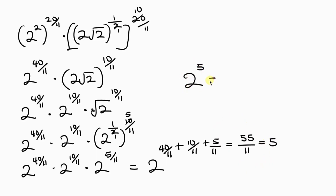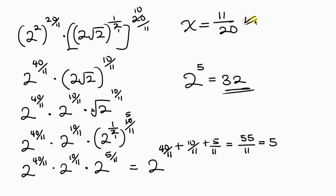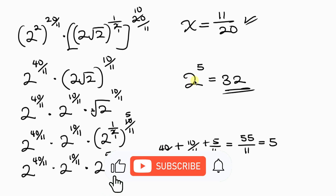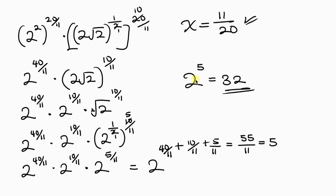And 2 to the 5 equals 32, which matches the right hand side. This confirms that our value of x equals 11 over 20 is correct. Feel free to share your ideas in the comments below. If you enjoyed this video, give it a thumbs up, subscribe, and turn on the notification bell so you don't miss upcoming videos. Until next time, take care.